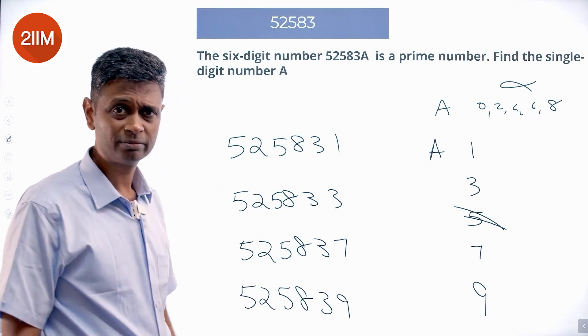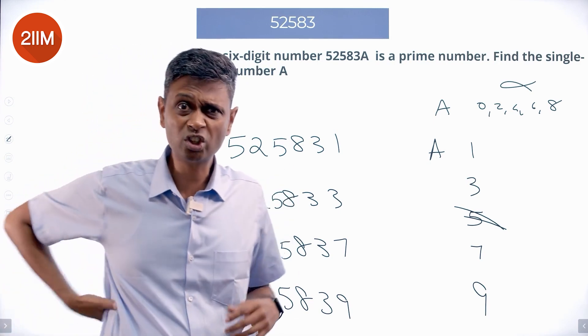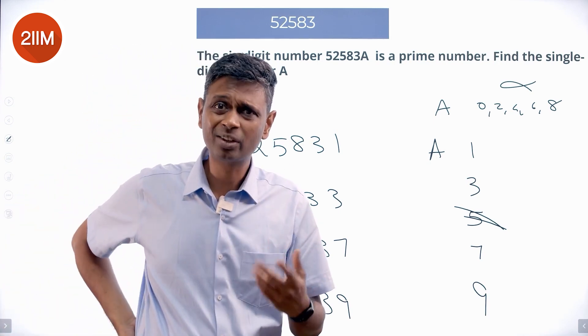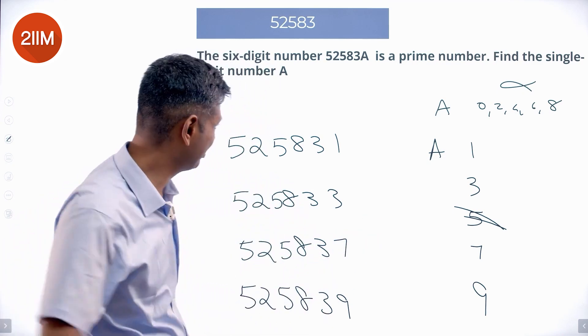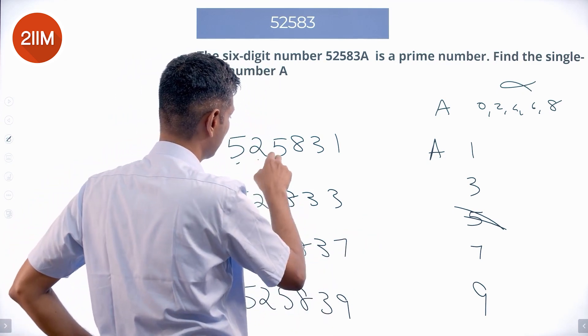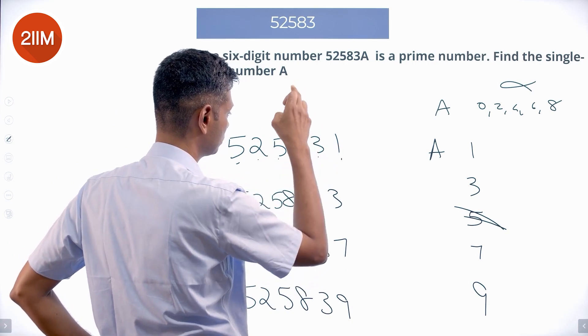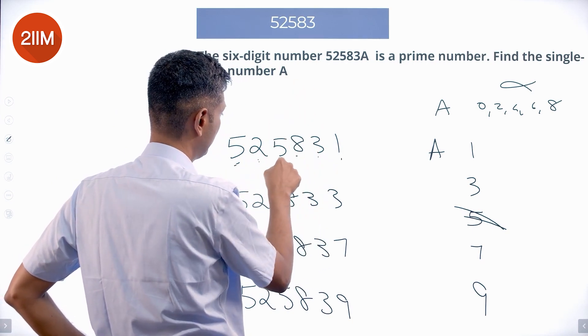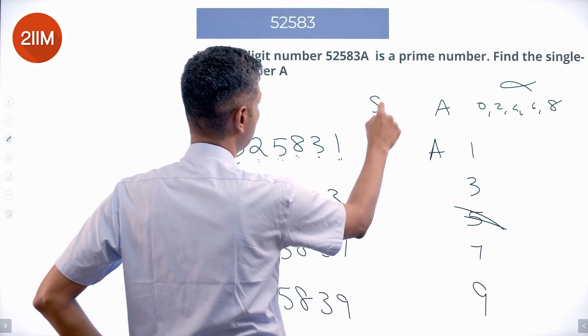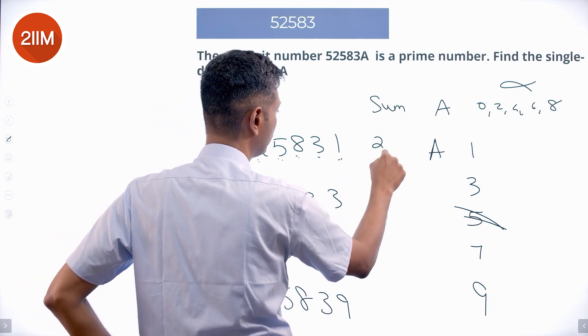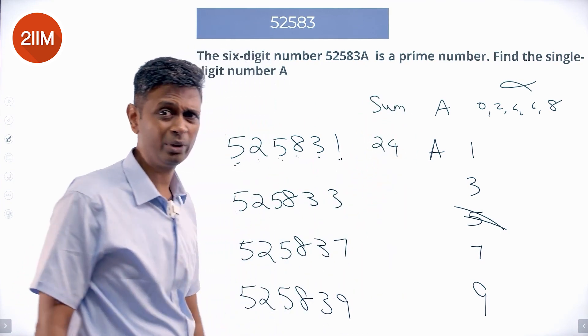Let me see if this is prime. How do I check whether such a large number is prime? I'll add all the digits: 5+2=7, 7+5=12, 12+8=20, 20+3=23, 23+1=24. Sum of the digits is 24.